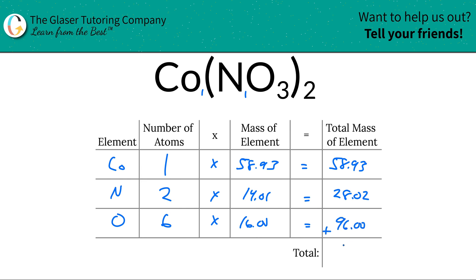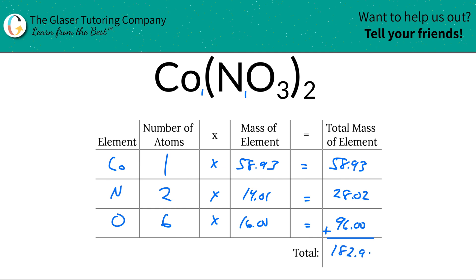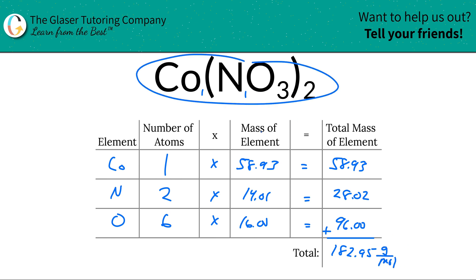To find the total mass of the entire compound, we simply add this column together — all the total masses of each element. That gives us 182.95. Since we're solving for molar mass, the units are in grams per mole. Now you know how to find the molar mass of cobalt(II) nitrate.